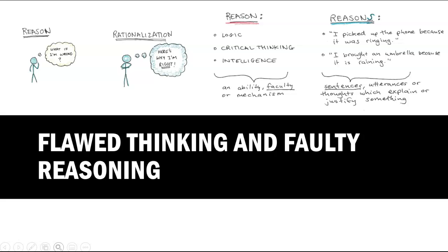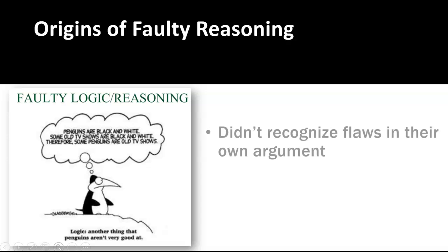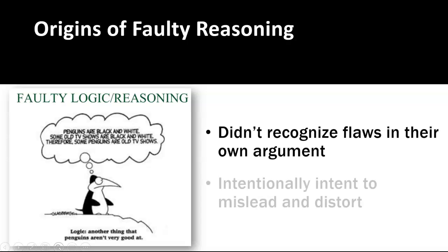Why do these flaws occur? Authors may not recognize their own arguments have flaws. However, they may intend to manipulate their audience by misleading them and deliberately distorting reasoning, or intentionally misusing language to create particular responses. It may be used to exaggerate a point to influence the audience or to deflect from a weak argument overall.